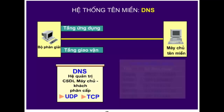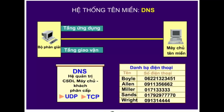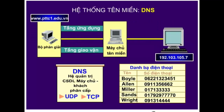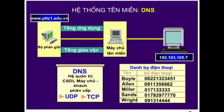Chức năng của DNS có thể được so sánh với chức năng của cuốn danh bạ điện thoại. Người sử dụng có thể tìm tên của người cần liên lạc trong cuốn danh bạ, sau đó tìm ra số điện thoại tương ứng. Tương tự, khi máy tính muốn liên lạc với một máy tính nào đó thông qua tên máy, thì DNS sẽ ánh xạ tên đó thành địa chỉ IP tương ứng. Để đảm bảo tính hiệu quả, bộ phân giải sử dụng UDP để liên lạc với máy chủ và chỉ sử dụng TCP trong trường hợp dữ liệu trả lời bị lỗi hoặc không hoàn chỉnh.